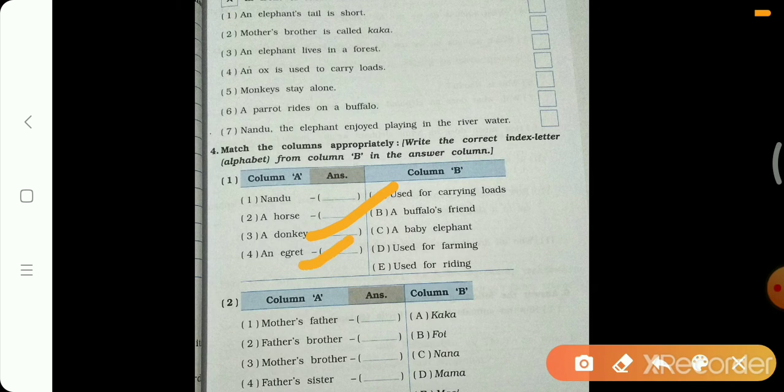And egret is the buffalo's friend. A baby elephant. Kaun tha baby elephant? Nandu. Nandu is a baby elephant. And used for farming. Toh is mein se toh koi nahi hai. Used for riding. Yes, ye hai. Horse is used for riding. Next.